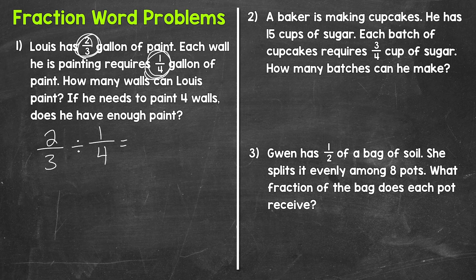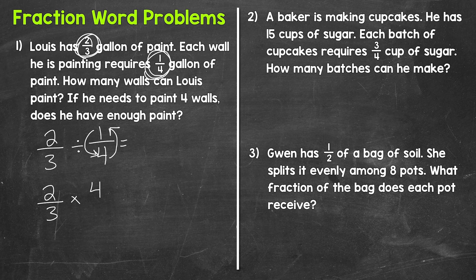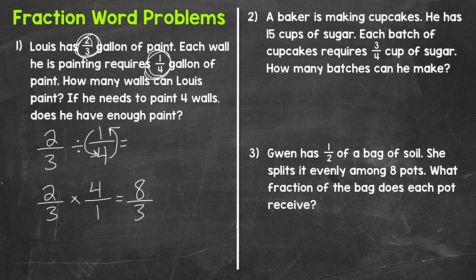That will tell us how many walls Lewis can paint. When we divide fractions, we keep, switch, flip. So we keep the first fraction, switch to multiplication, and flip our second fraction — four is now the numerator and one is now the denominator. Multiplying straight across: two times four gives us eight, and three times one gives us three. We end up with eight-thirds, which is an improper fraction.